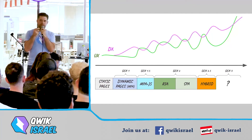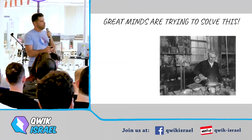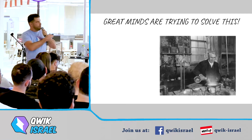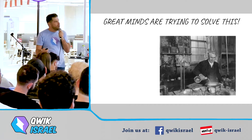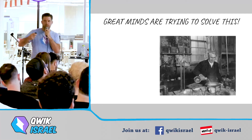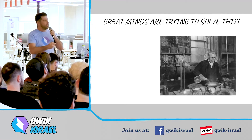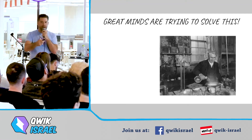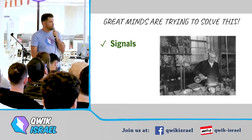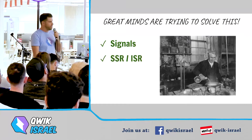If you can find a combination of both — great UX and great DX — you have something really interesting. As a matter of fact, great minds are trying to solve this issue. This is where everything is going: trying to solve the UX problem while maintaining a good developer experience.